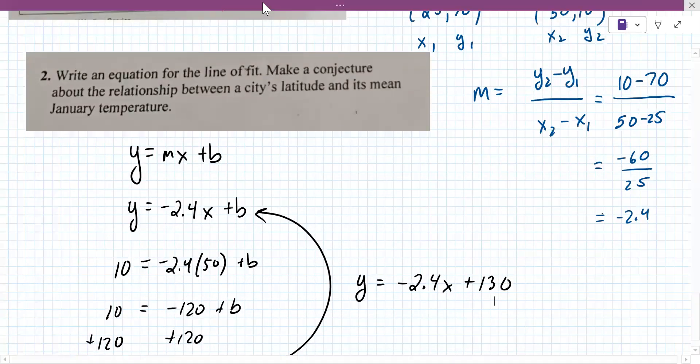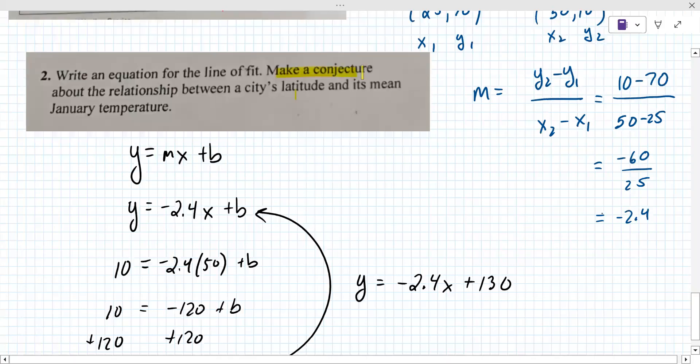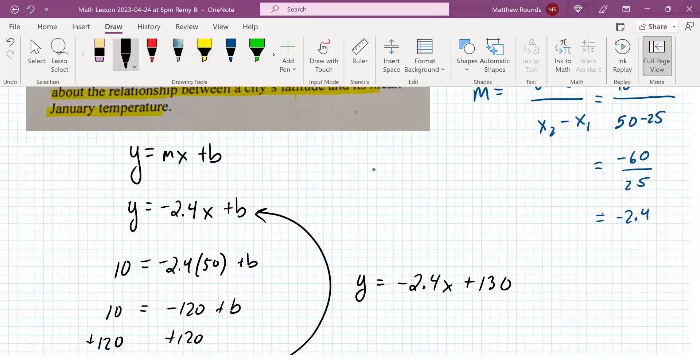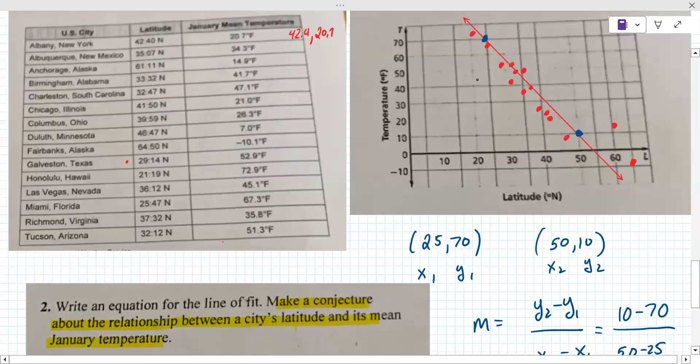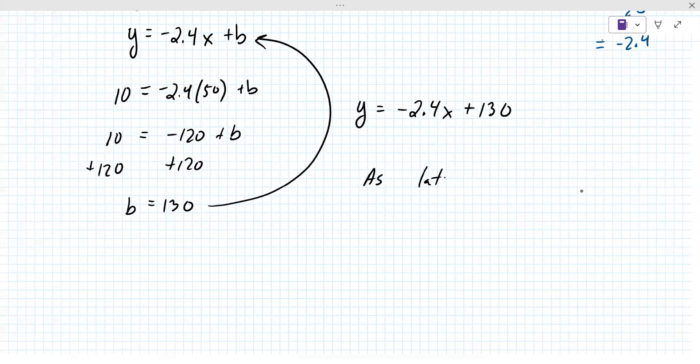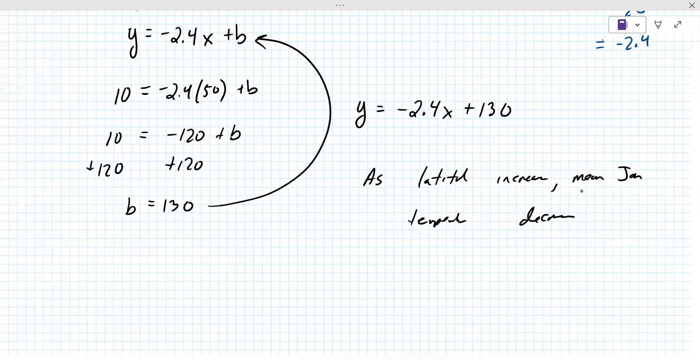Now we can quickly make a conjecture. It says make a conjecture about the relationship between a city's latitude and its mean January temperature. So what I want you to focus on in the graph here is what do you see graphically? What's going on in the graph right here? It's going down. Right. So that's how you answer it. You say as latitude increases, mean January temperature decreases. Okay. All right. So we're going to go ahead and stop there for today.